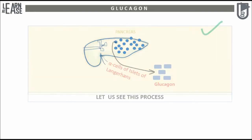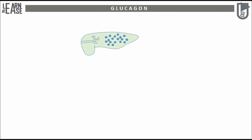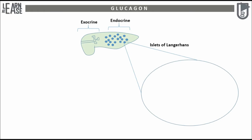The sketch of the pancreas is shown here. The major portion of the pancreas deals with producing digestive juices and contains ducts; this region is known as the exocrine portion. The narrow tail portion of the pancreas carries endocrine clusters of cells known as islets of Langerhans, and this tail portion is endocrine in nature. Islets of Langerhans are 1 to 2 million in number and occupy 1% of the total space of the pancreas.